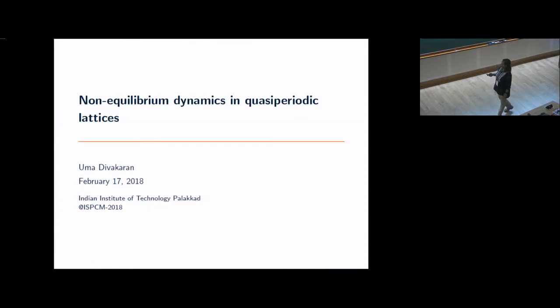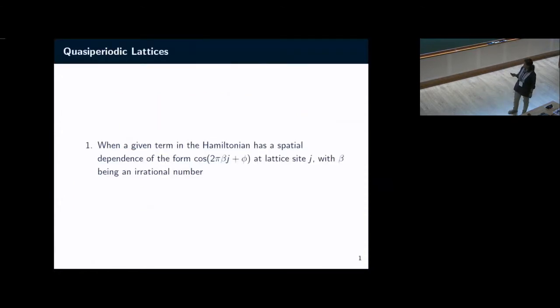In a quantum Hamiltonian, with quasi-periodicity what I mean is if one of the terms in the Hamiltonian has a periodic dependence like cosine of 2π beta j, where j is the lattice site, and provided beta is an irrational number.